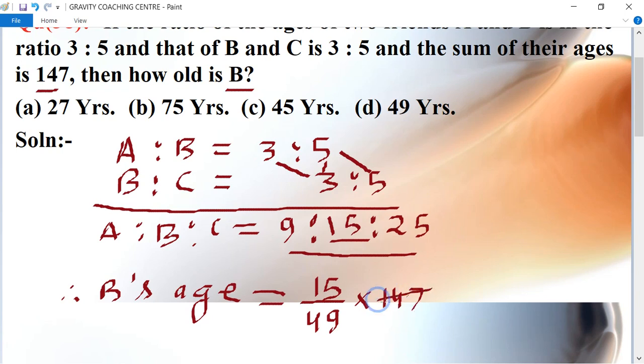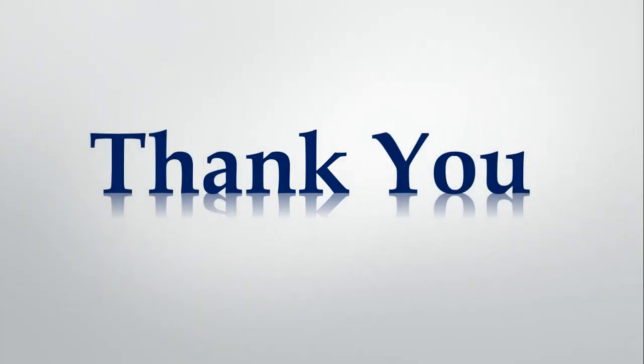Now it cancels by the table of 7, 7 into 49 and 7 into 21, again 7 into 7 is 3, so 15 times 3 is 45, so 45 years. Option C is the right answer.